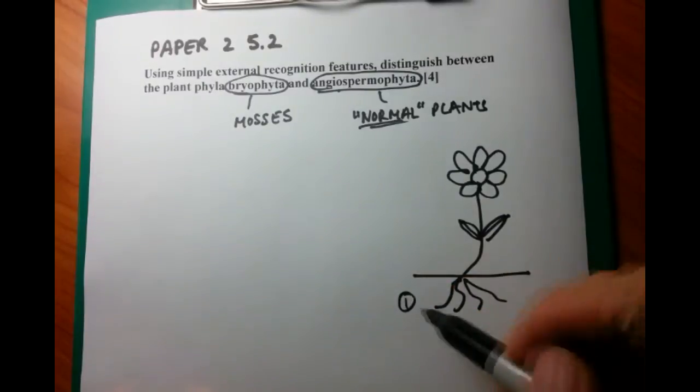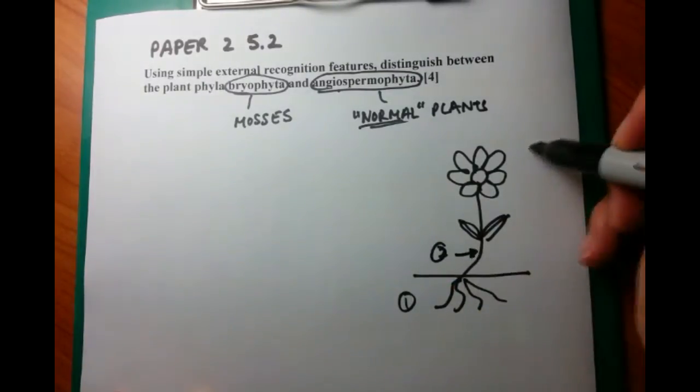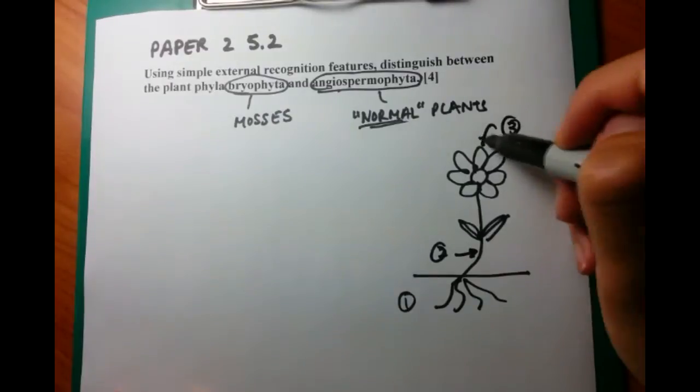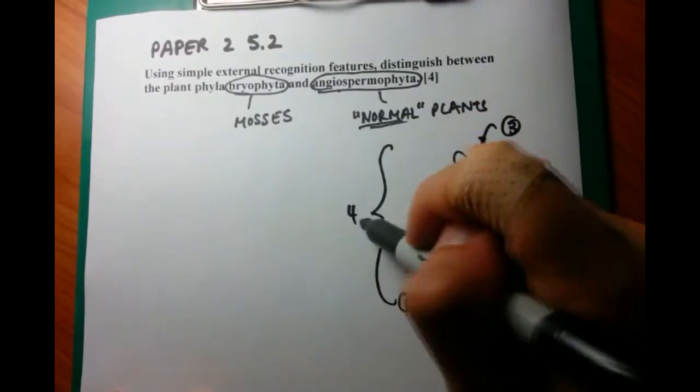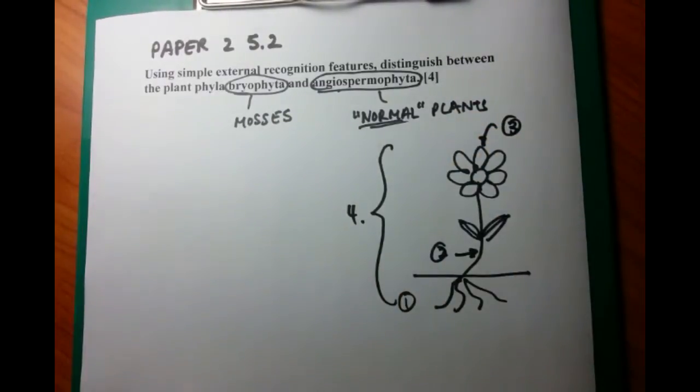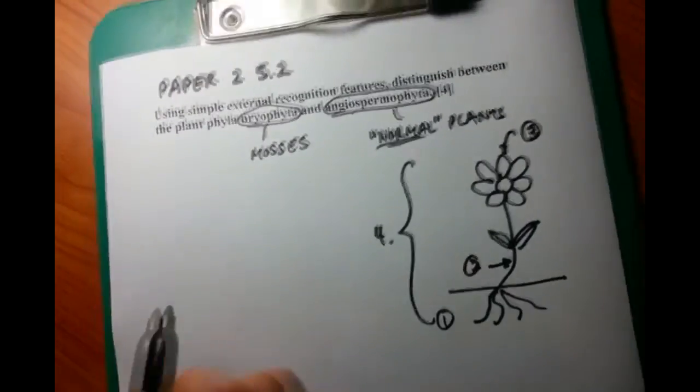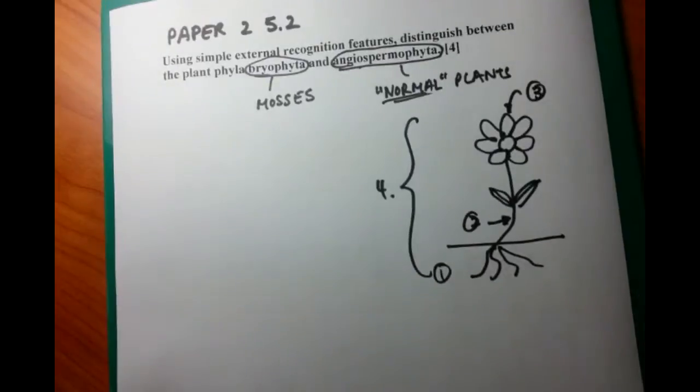First thing is the roots. Bryophyta and Angiospermophyta have different types of roots. Second thing is the stem or the vasculature. Thirdly, we're going to talk about how they reproduce. And finally, on number four, which I've just drawn, I want to talk about the height.